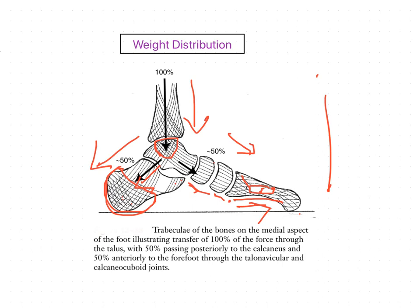Now we will see in detail. Because of the more medial location of the tala head, about twice as much weight passes through the talo navicular joint as through the calcaneo cuboid joint.